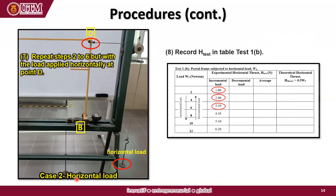For Case 2, the portal frame is subjected to a horizontal load. Repeat steps 2 to 6, but this time the load is applied horizontally at point D. Record the horizontal thrust in Table 1B. Calculate the average and the theoretical horizontal thrust.